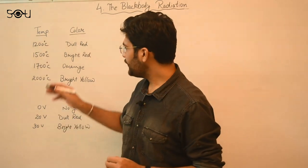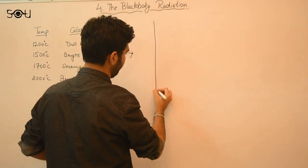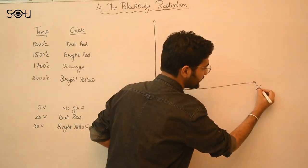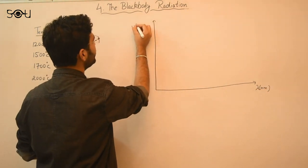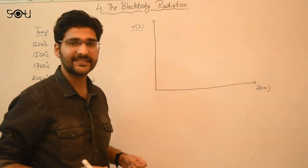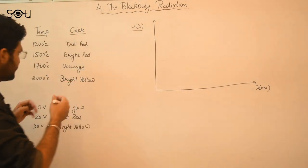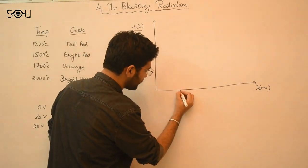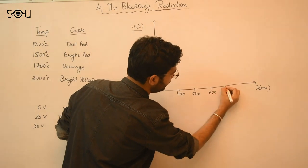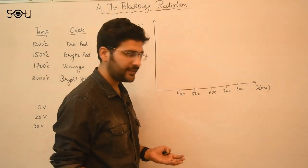So now we are going to plot these observations on a graph and see what we get. I am going to draw a graph between wavelength lambda in nanometers and something I call U(λ). For the time being, you can consider U(λ) to be intensity. I will tell the exact meaning later. Let me mark some points: 400 nanometers, 500, 600, 700, 800. So this is the visible range, which lies between roughly 400 nanometers to 800 nanometers.